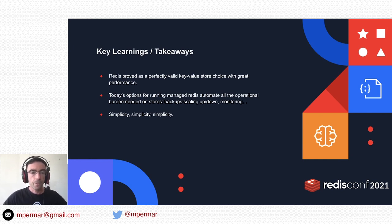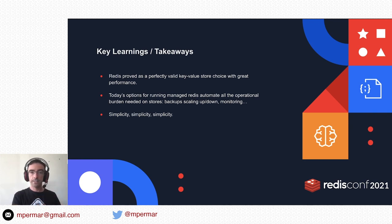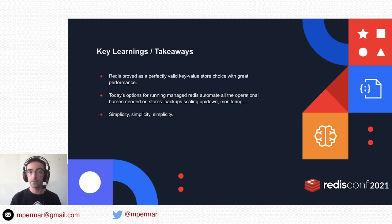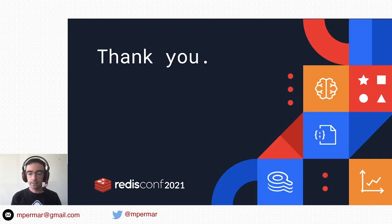Key learnings: for us, Redis was the perfect choice as a key-value store. Great performance, great capabilities, and simplicity — easy to use, easy to understand, constraint-driven. We found that operating Redis at large scale in a geo-distributed way, with multiple clusters and multiple AZs within the same cluster, was smooth. Scaling up, monitoring, and backups all worked fantastically. Some resources are listed here if you want to learn more. Hope you liked it — thank you very much.